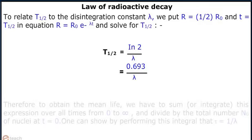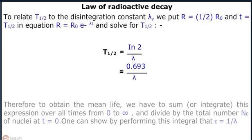To recap: if N is the number of nuclei in the sample and ΔN undergo decay in time Δt, then ΔN/Δt = λN, where λ is the radioactive constant or disintegration constant. We can measure the number of emissions of alpha, beta, or gamma particles in a given time interval, say 10 seconds or 20 seconds.